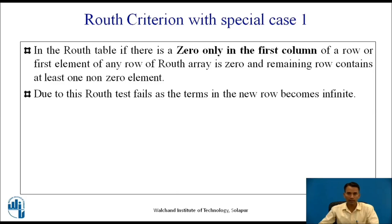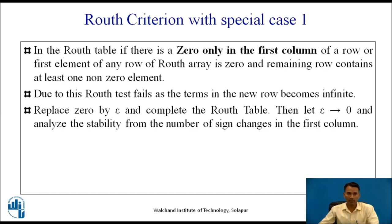Since we cannot find the stability of the system in this case, to overcome it, in the special case of Routh Criteria, we replace the zero by epsilon, complete the Routh table, then let epsilon tend to zero, and again analyze the stability from the number of sign changes in the first column.